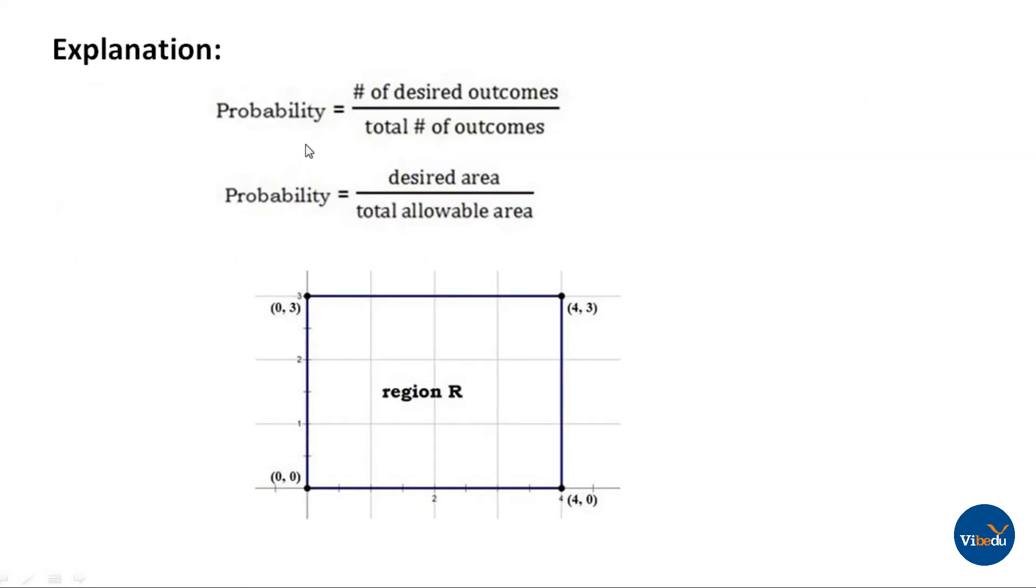Explanation: the probability formula is number of desired outcomes divided by total number of outcomes. The probability equals desired area divided by total allowable area.